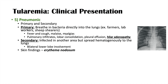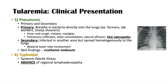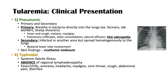With pneumonic tularemia in general, the skin finding of erythema nodosum is more common. The sixth clinical presentation is typhoidal tularemia, a systemic febrile illness. Patients have fatigue, malaise, fever, and chills. The key distinguishing feature is the absence of regional lymphadenopathy — unlike all other forms. Additional symptoms include anorexia, headaches, myalgia, sore throat, cough, and abdominal pain and diarrhea, with very diffuse abdominal tenderness.